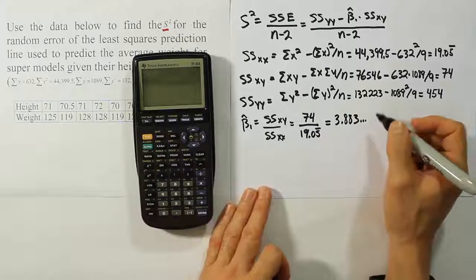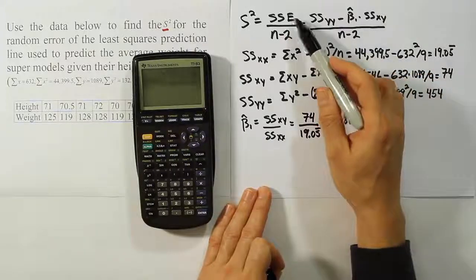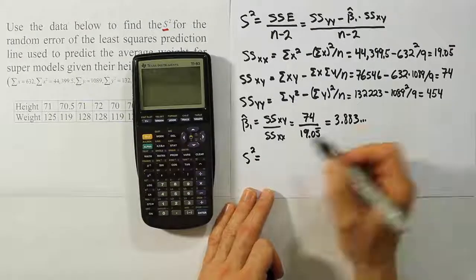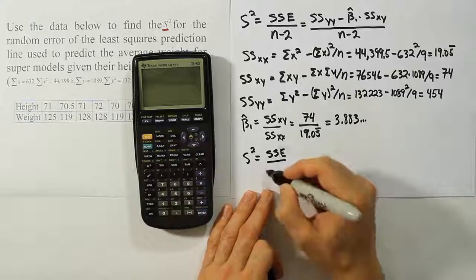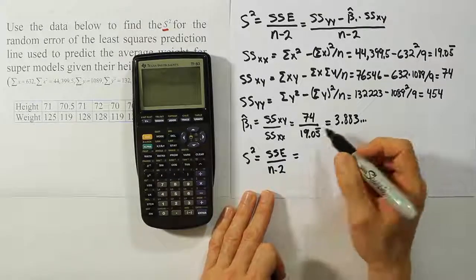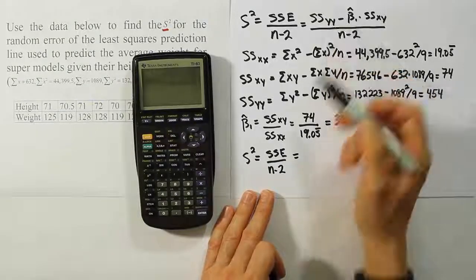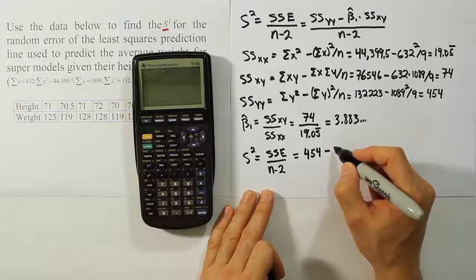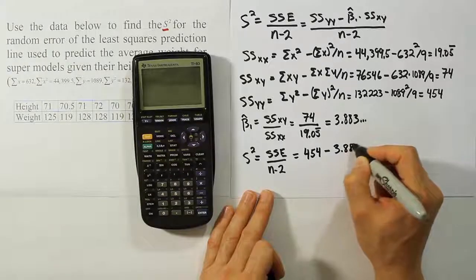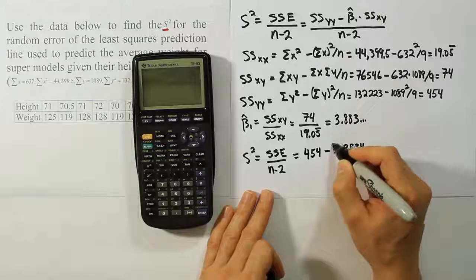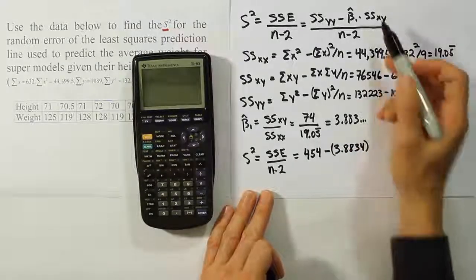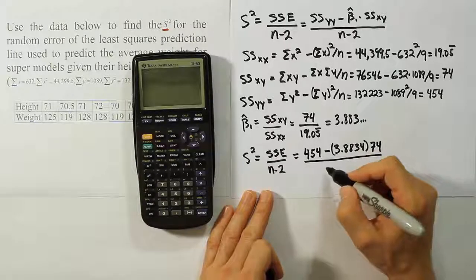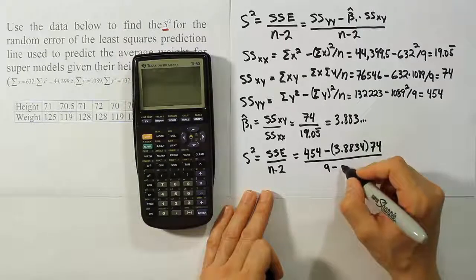Now that value is going to be used in the formula for S squared and SSE. So let's go ahead and write that formula down and finish our problem. We're doing SSE over N minus 2. So in this case that's going to be the sum of squares for the Y terms, which is 454, minus the slope we just calculated, which we're going to put in as 3.88, let's just say 3.4 to round off here a little bit. And then we're going to do times the sum of squares for the mixed term, which is 74, divide all of that by 9 minus 2 or 7.